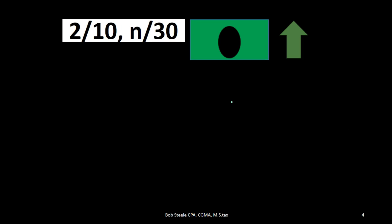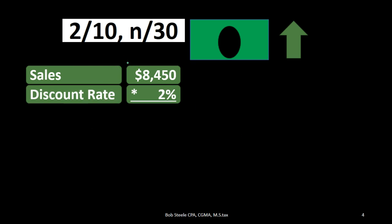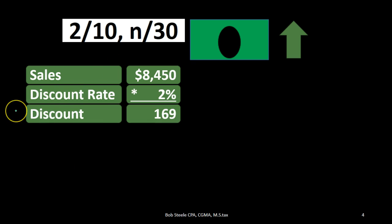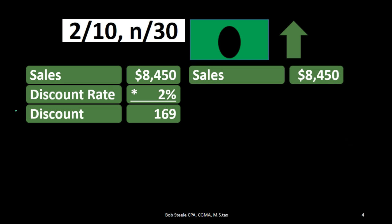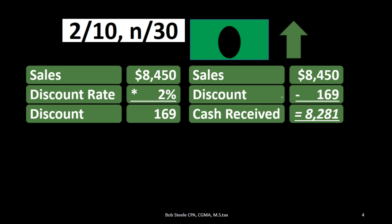First we're going to calculate the actual discount. We can do this a couple of different ways — I'll do it the long way first. This is useful because it's the same way we calculate a discount when going to a store. With a 2/10 net 30, the 2% discount applies if paid within 10 days. We take the original sales price of $8,450 and multiply by 2%, giving a discount amount of $169. So the cash received would be $8,450 minus $169, which equals $8,281.